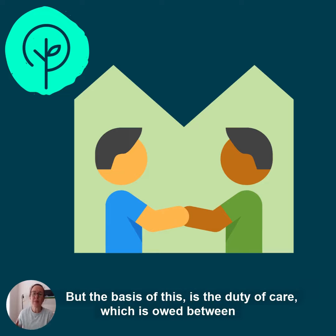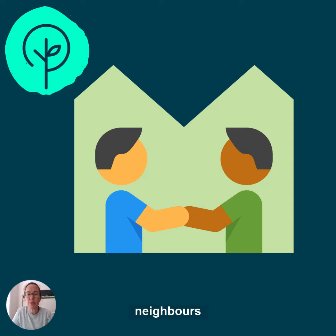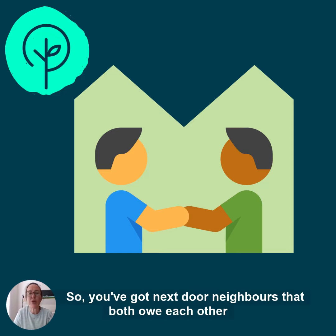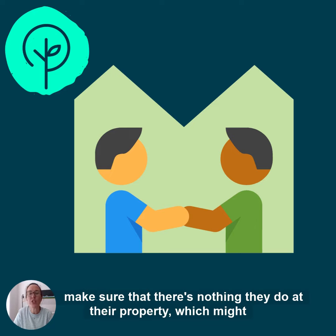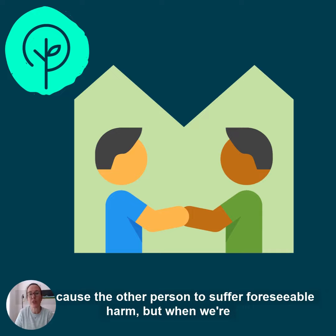But the basis of this is the duty of care which is owed between neighbours. So you've got neighbours that both owe each other a duty of care in negligence to take reasonable care, to make sure that there's nothing they do at their property which might cause the other person to suffer foreseeable harm.